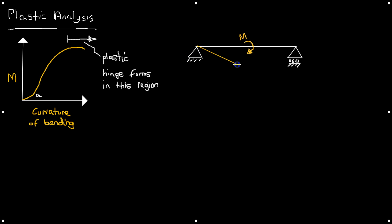Now just try and get your head around how that would happen. We have a plastic hinge form in the middle, and this is how this beam in this scenario would fail once the hinge forms in the middle and it cannot take any more moment.